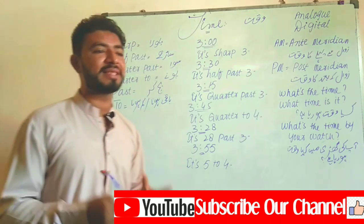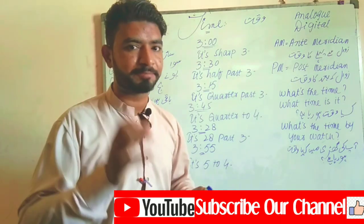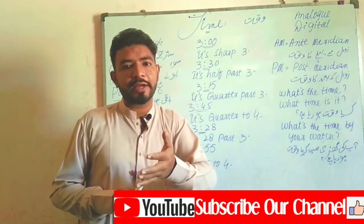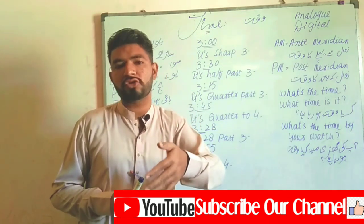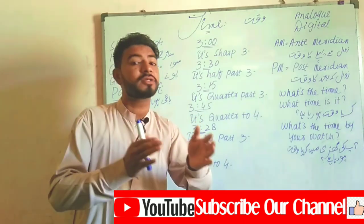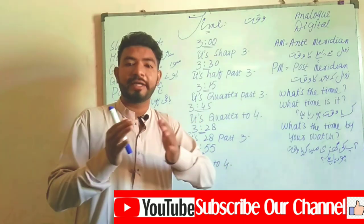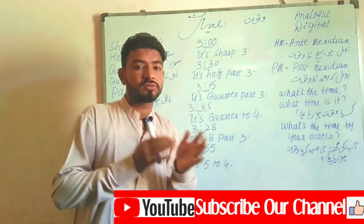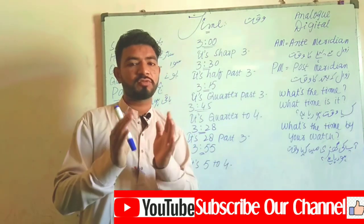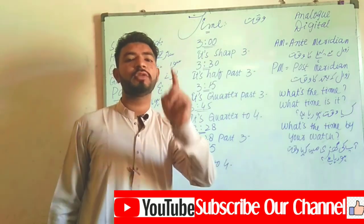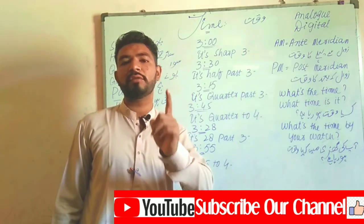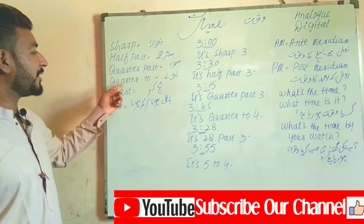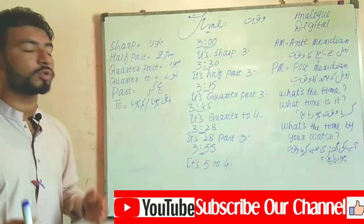'Quarter past' is used when the digit fifteen appears with any hour. So three fifteen is 'quarter past three,' four fifteen is 'quarter past four,' and six fifteen is 'quarter past six.' Whenever the digit fifteen comes along with the hour, you use 'quarter past.'